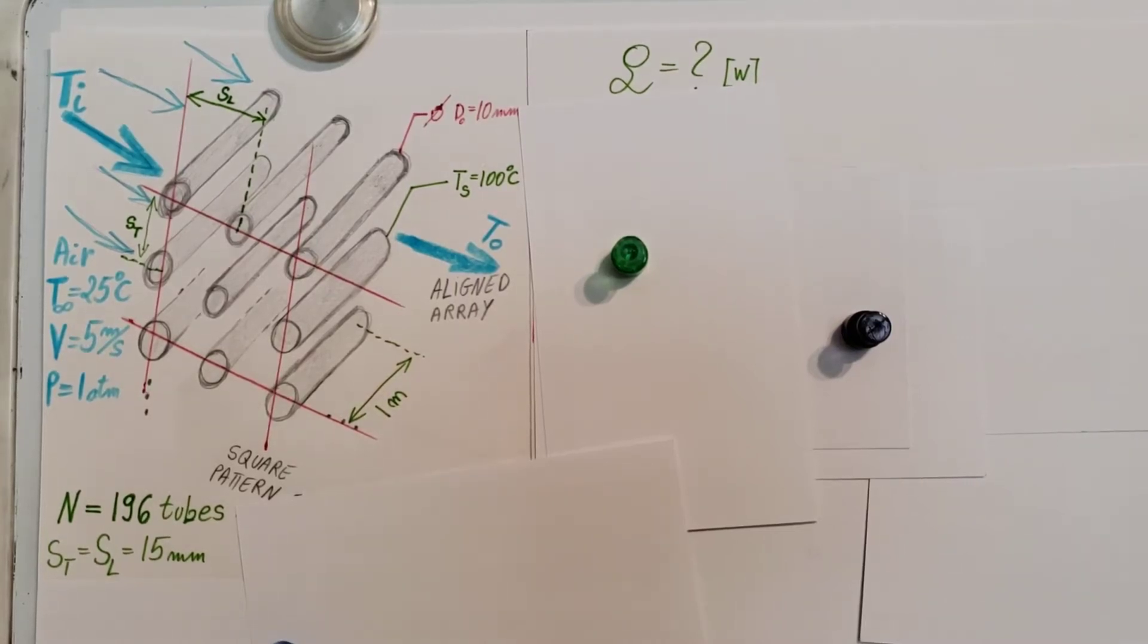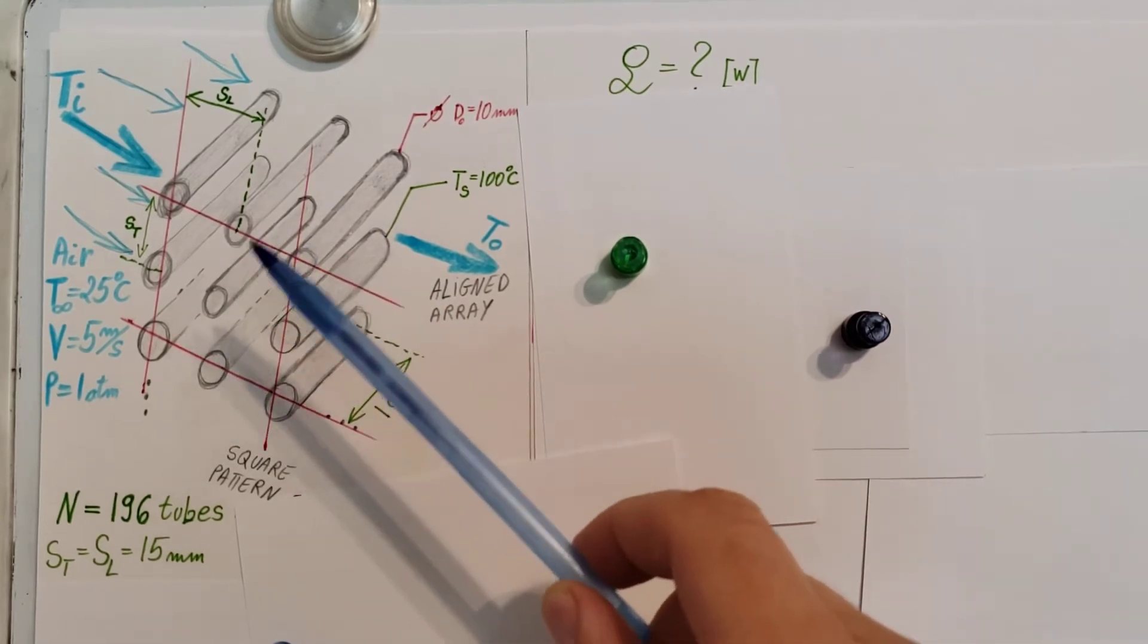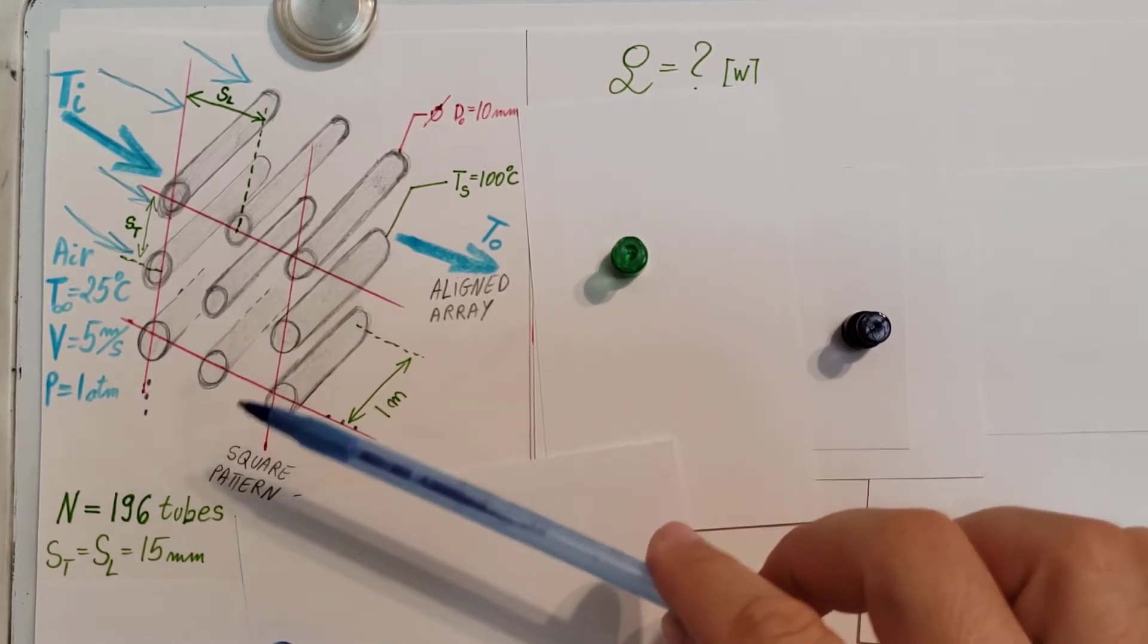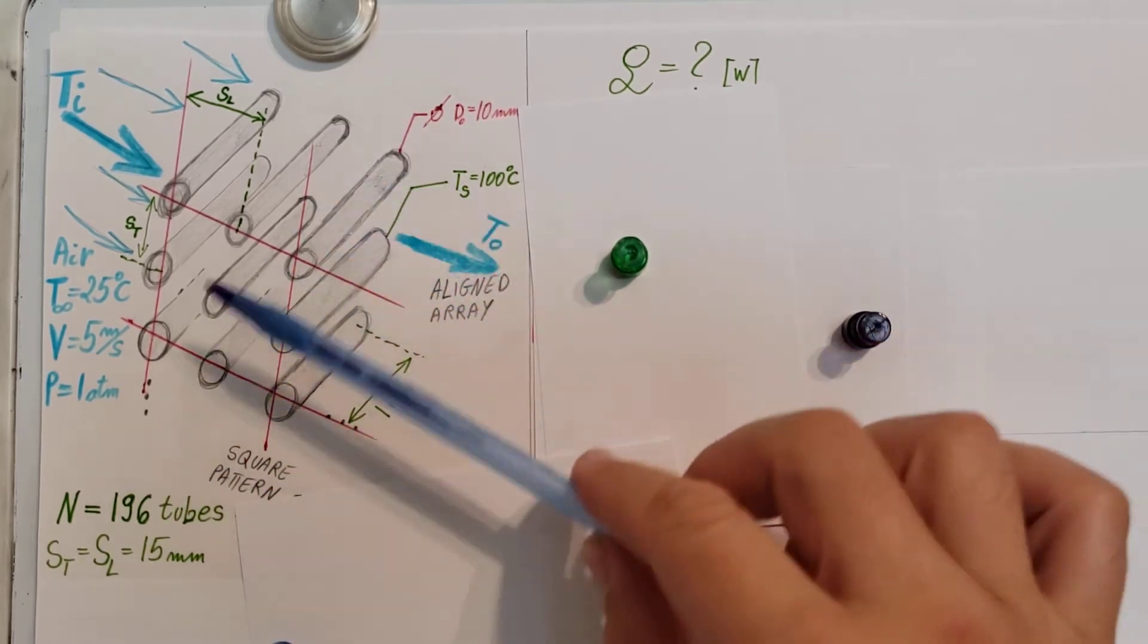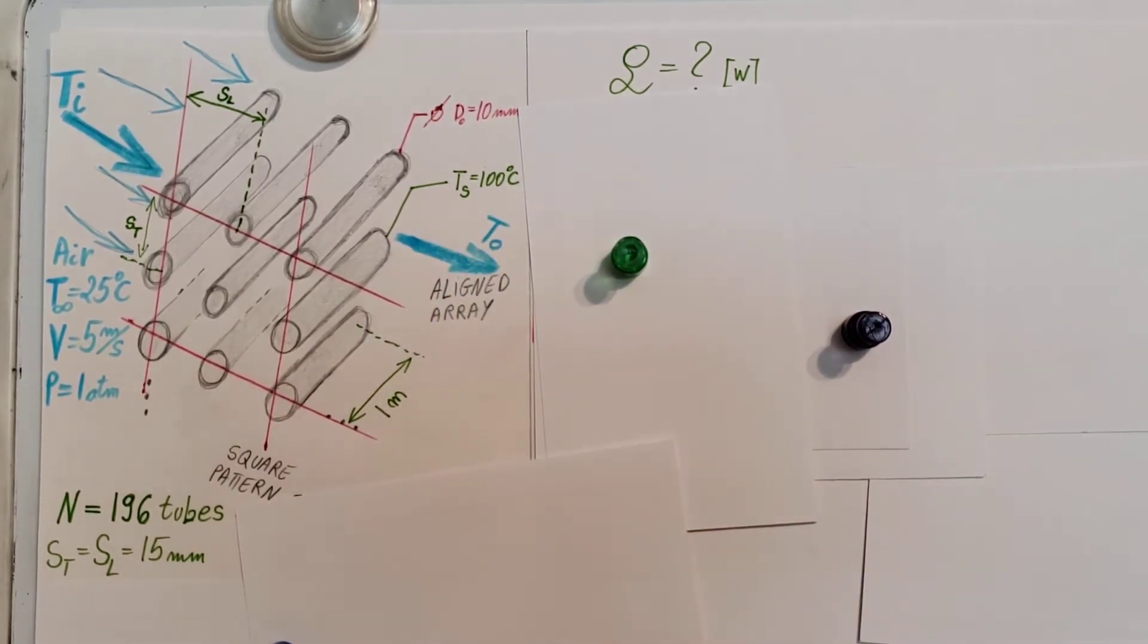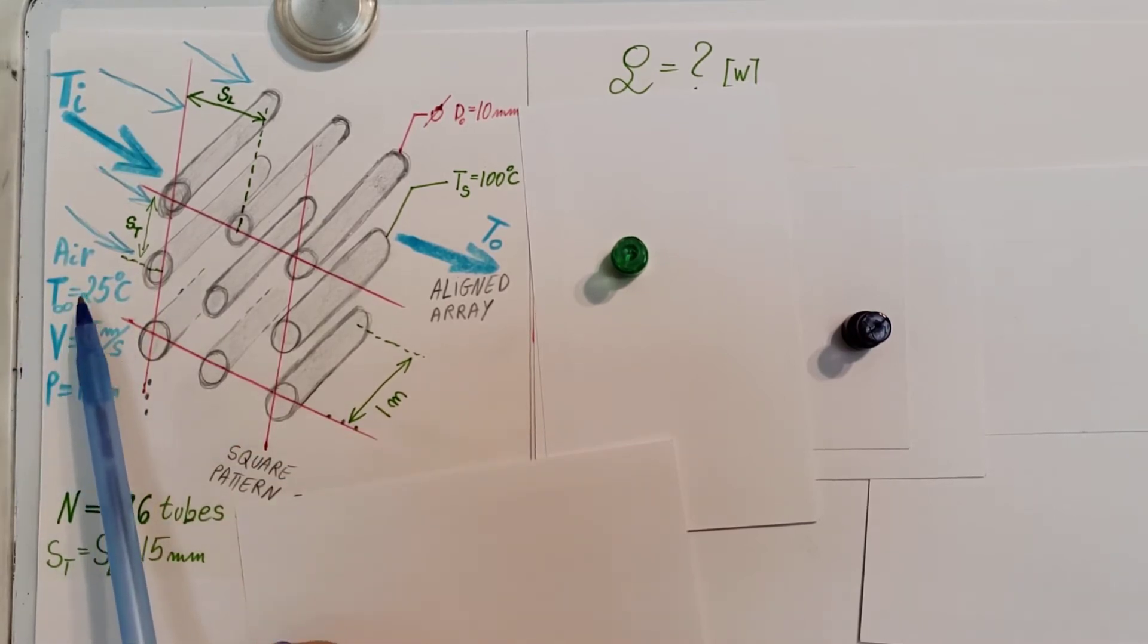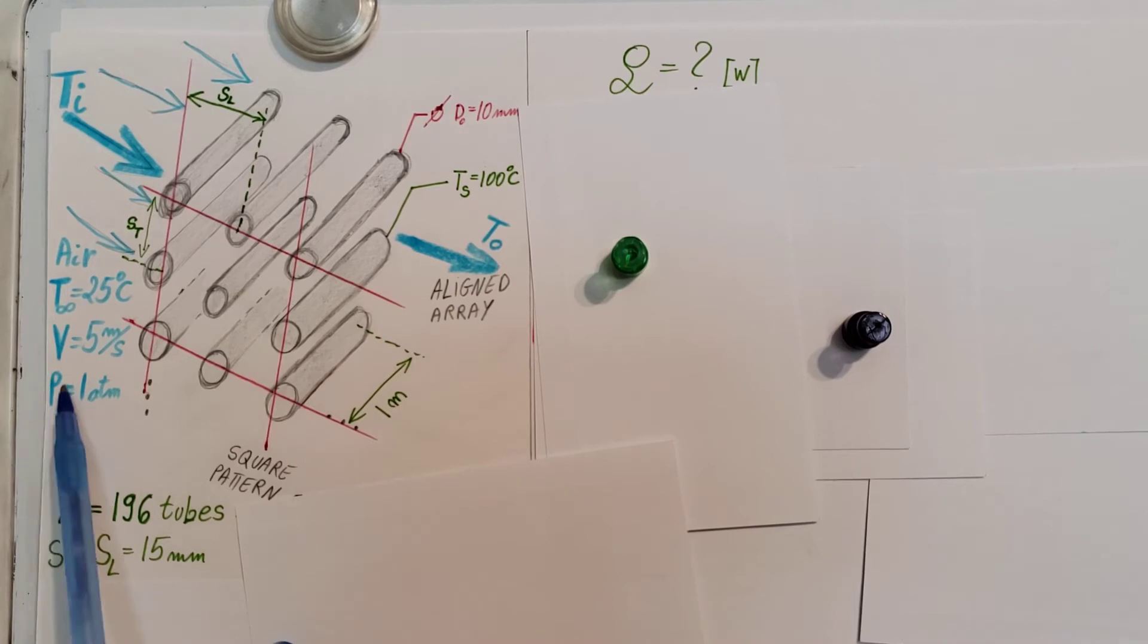This is a heat transfer problem involving a device used as a preheater. It has a bank of tubes inside it - 196 tubes arranged in a square pattern. Inside the tubes we have steam condensing at 100 degrees Celsius. Since we have phase change, the temperature along these tubes is constant at 100 degrees Celsius, our TS. Air is passing through the system at the inlet with temperature of 25 degrees Celsius. The outlet temperature we don't know. We also know the velocity for the air is 5 meters per second at a pressure of 1 atmosphere.